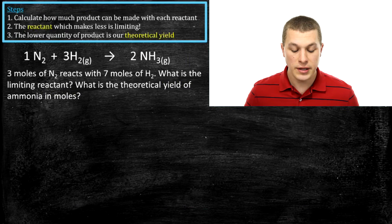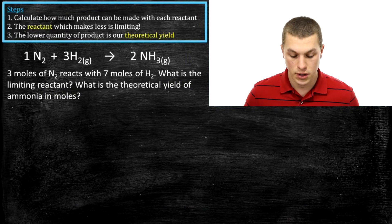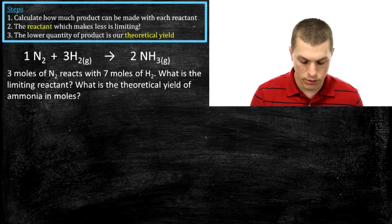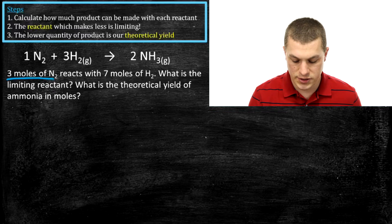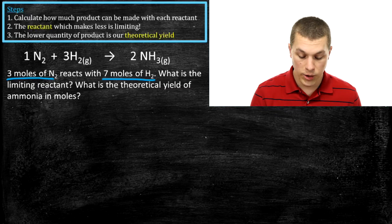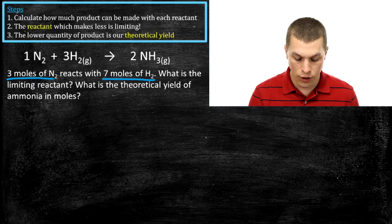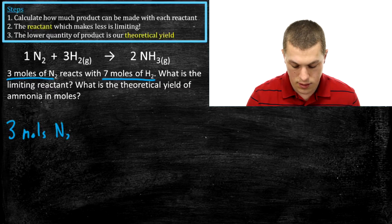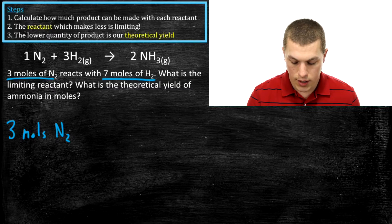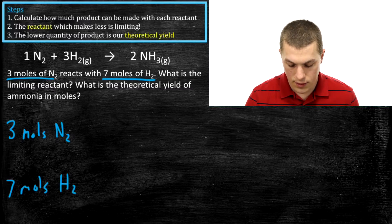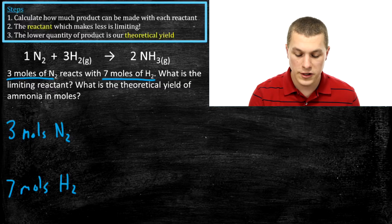This problem says three moles of N2 reacts with seven moles of H2. What is the limiting reactant, and what is the theoretical yield of ammonia in moles? This is what we're running our reaction with — three moles of N2 and seven moles of H2 — basically what we have on hand in the chemistry lab. We're going to do this problem the same way, going from three moles of N2 to how much ammonia I can make, and from seven moles of H2 to how much ammonia I can make. I've broken this process down into three steps.